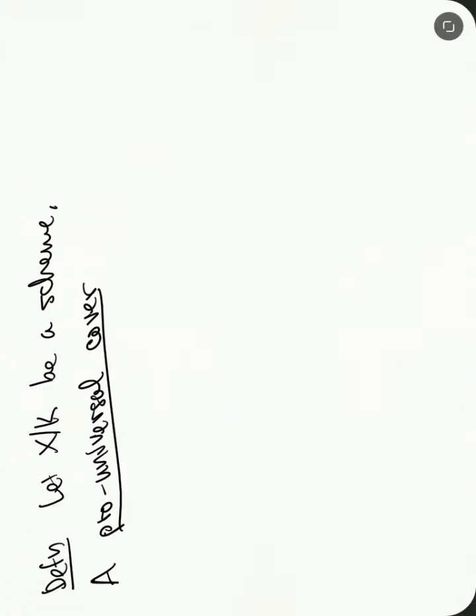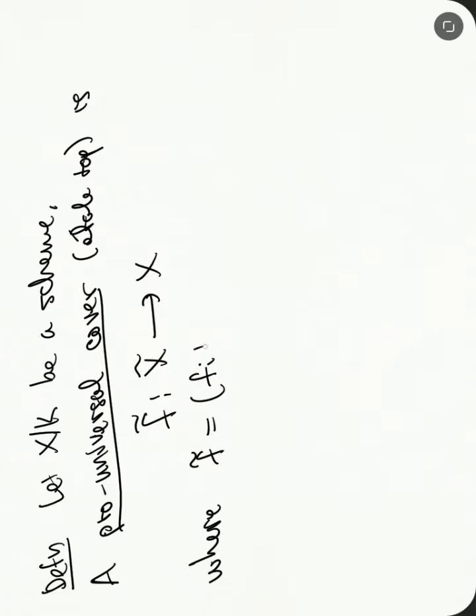So let's give a definition. Let x over k be a scheme. A pro-universal cover, so this is for the étale topology, is a collection. So it's f̃: x̃ → x. So this is going to be a pro-scheme where f̃ is equal to a collection of fᵢ's from xᵢ to x, for i ≥ 0 where these are finite étale covers.